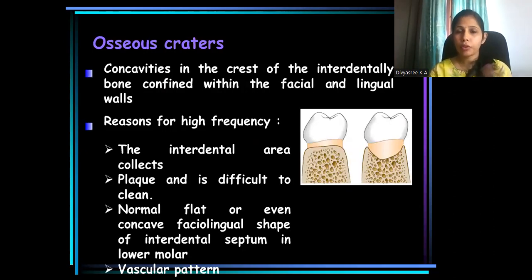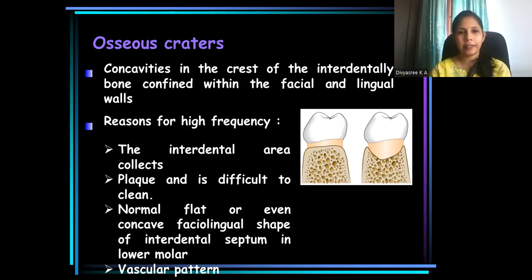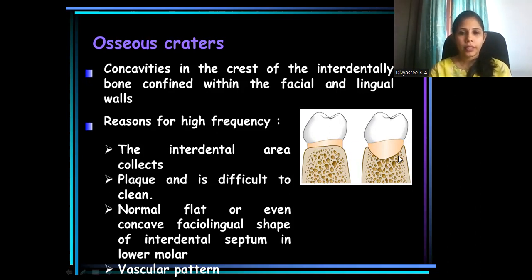Now we have osseous craters. Osseous craters are the most common bony defects seen in periodontal disease in the interdental area. They are bony concavities confined within the interdental area, within the facial and lingual walls, forming a concavity. There are many reasons for the high occurrence of such craters.